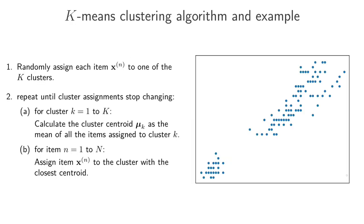Let's say we're given a data set like this one. The data set consists of items, and each item has two features: x1 and x2. The data set is unlabeled, so for each item we just have the value of x1 and x2. We don't have a target value that we're trying to predict. We might want to use this data set to find some structure in the data, and one task we could consider is clustering. The goal in clustering is basically to group the different items so that each group contains items that are similar to each other, and items in one group should be different from items in another group.